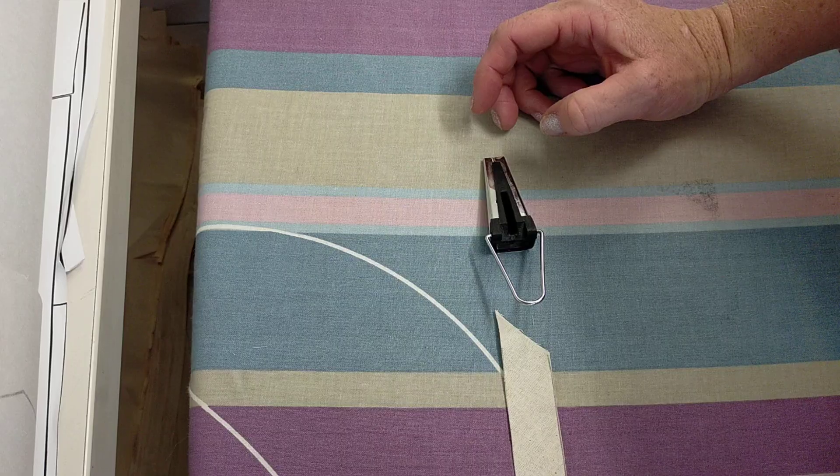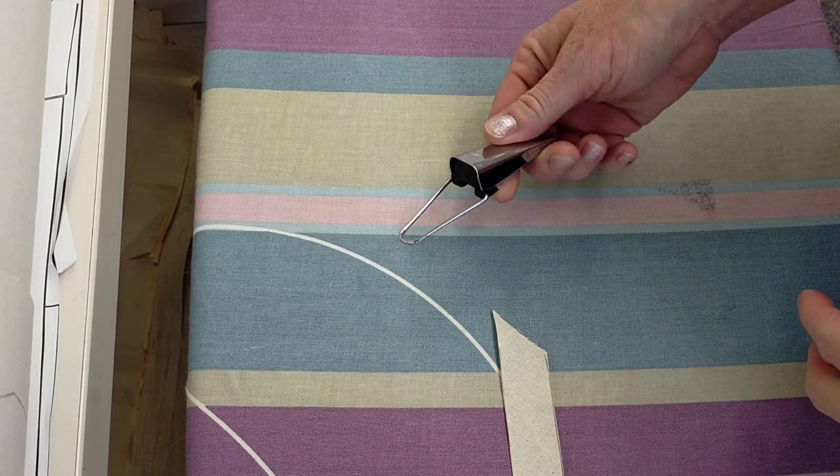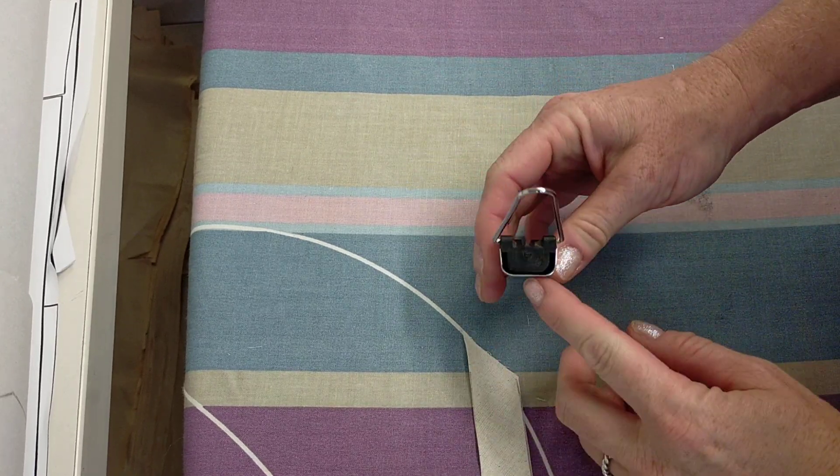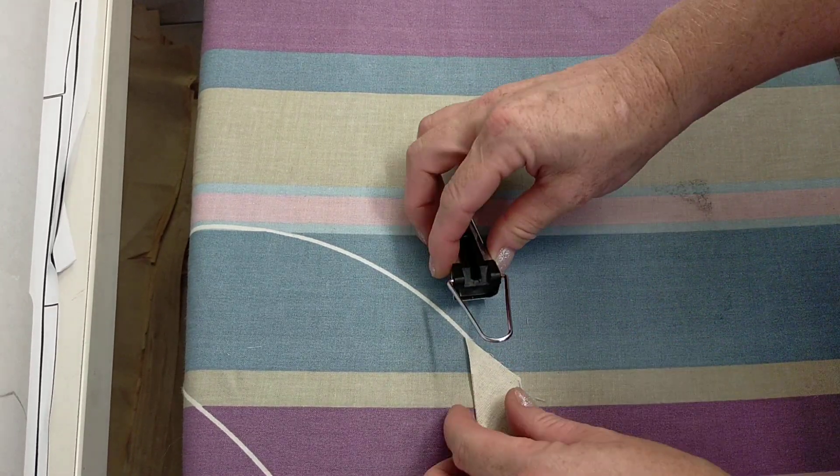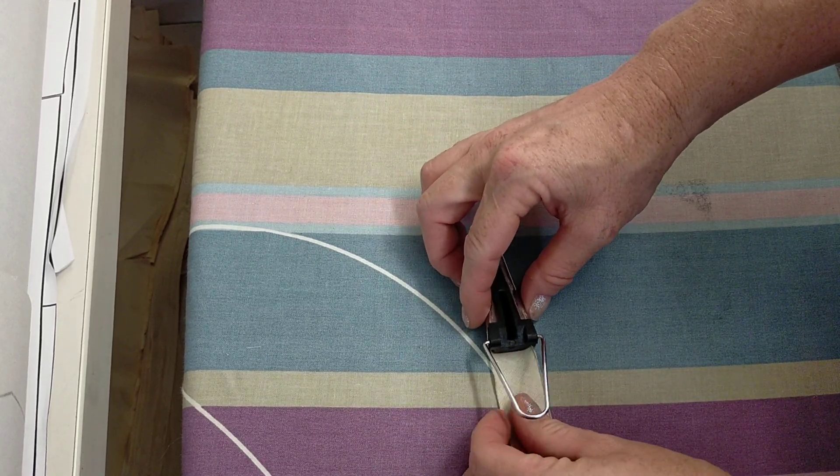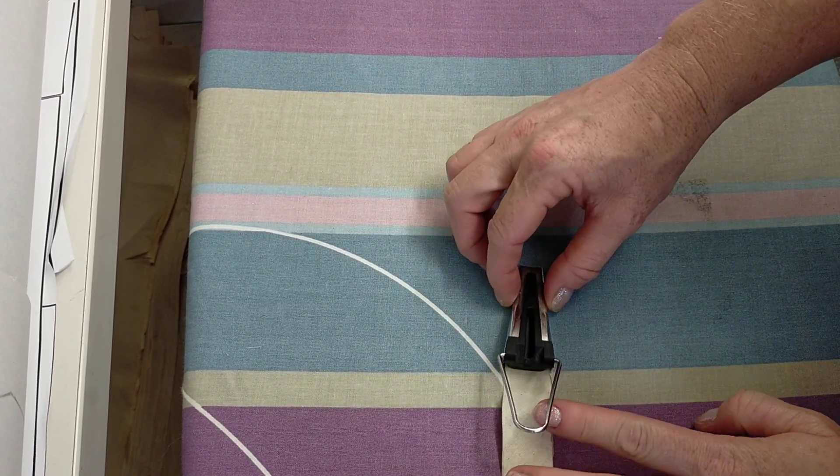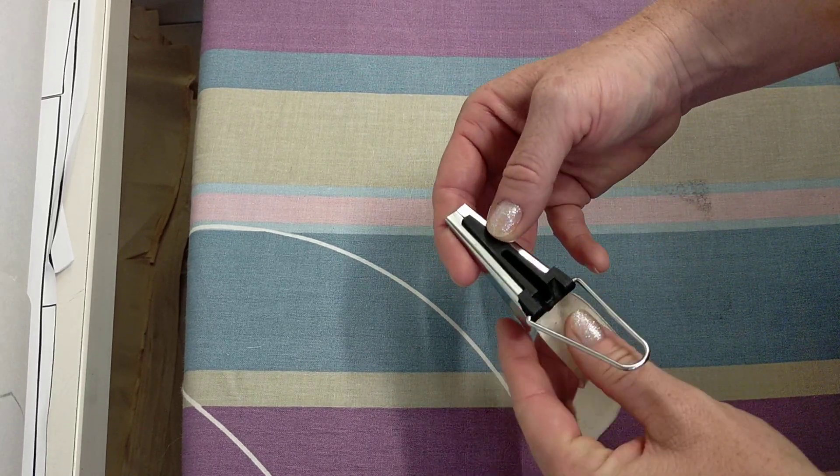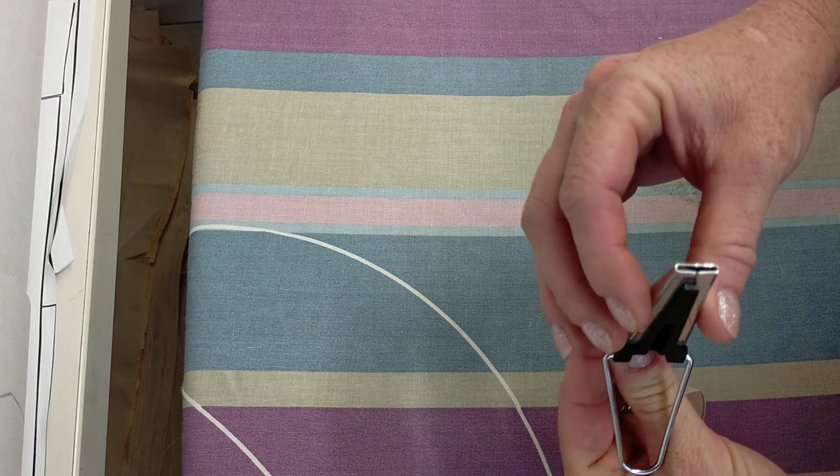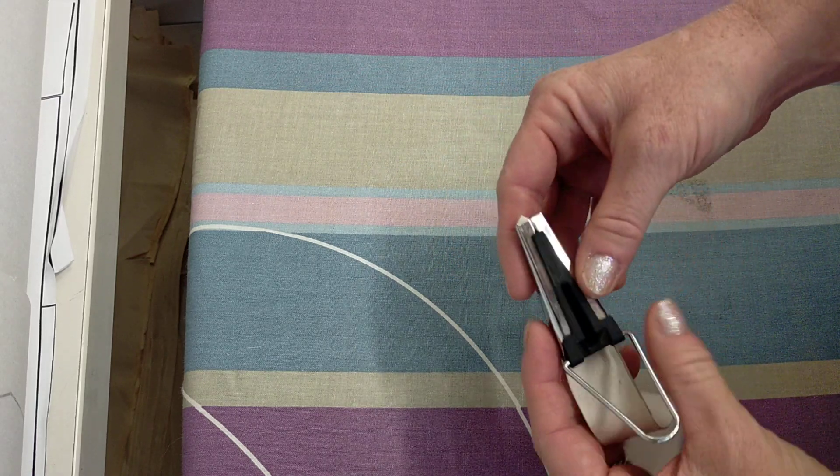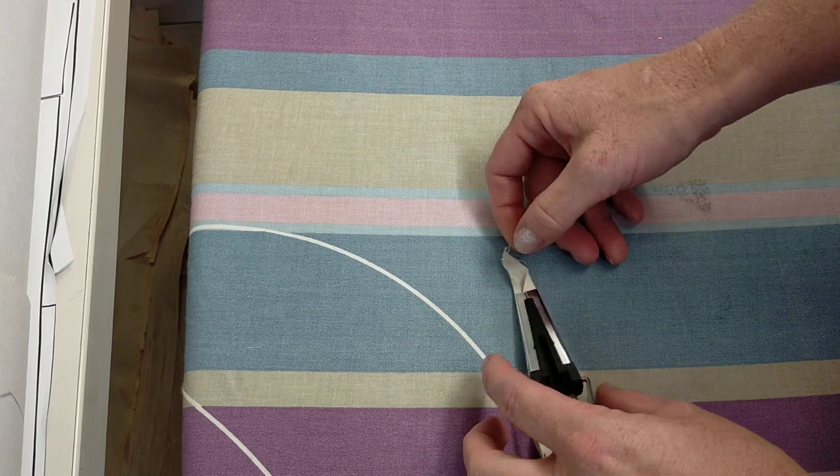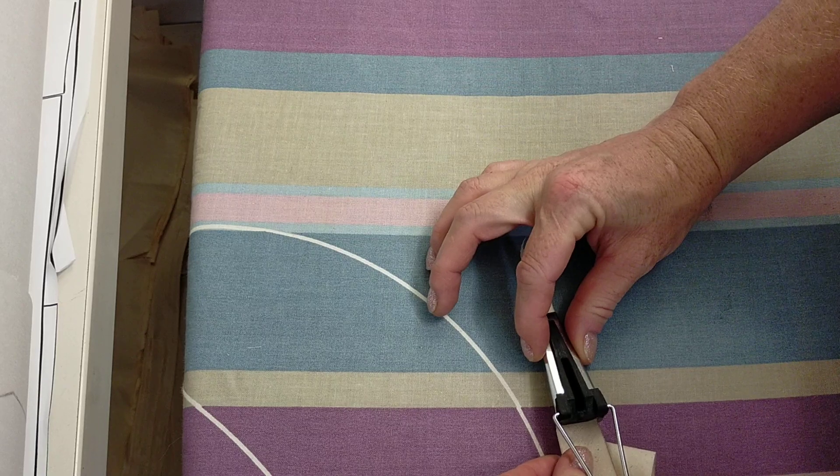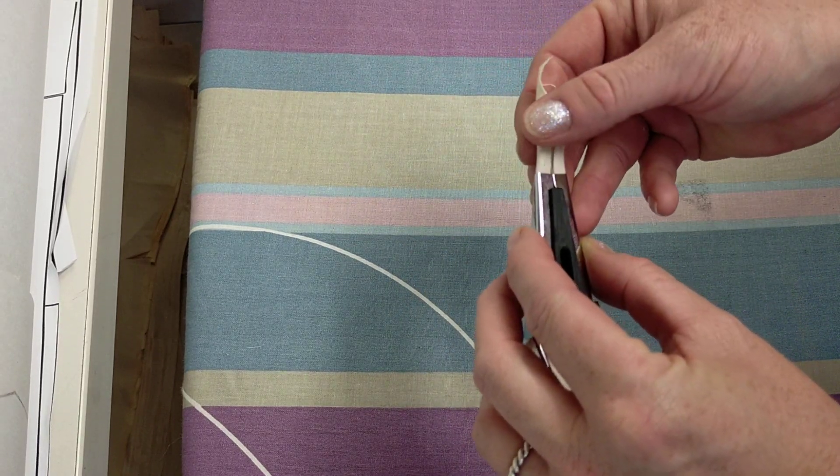Okay, so I've got my bias maker and my strap, and what I have to do is I have to feed it through this part here so it comes out the other end. Can be a little bit tricky to begin with. Once it comes out the other end, gently pull up so it starts to fold it.